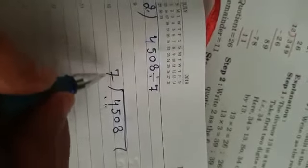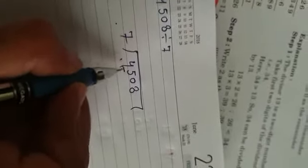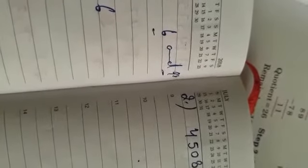The first digit of the dividend is smaller than divisor. Then students you can take two digits at first time. Now you have to check whether 45 comes in the table of 7 or not.